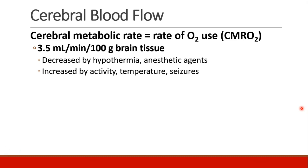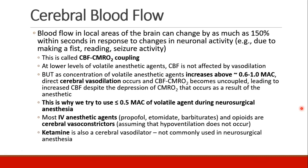The cerebral metabolic rate is the rate of oxygen use — we call this CMRO2. It's about 3.5 milliliters of oxygen per minute per 100 grams of brain tissue. Hypothermia and anesthesia will decrease cerebral metabolic rate, and it will be increased by activity, temperature, and seizure activity. Local areas of the brain can change their blood flow by as much as 150% within just a few seconds based on neuronal demand. This is called CBF-CMRO2 coupling — the relationship between cerebral blood flow and cerebral metabolic rate of oxygen consumption.